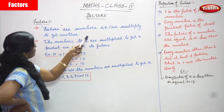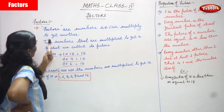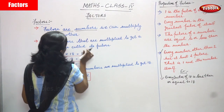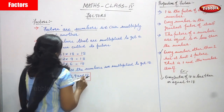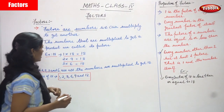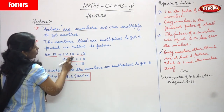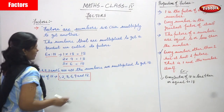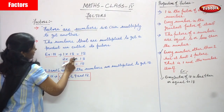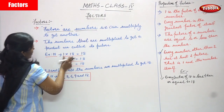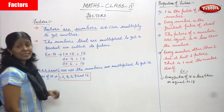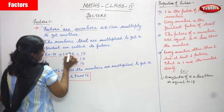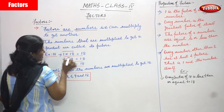Factors are numbers we can multiply to get another. So these are numbers — factors are numbers we can multiply to get another. For example, 1 into 18: you can get 18. These two numbers are multiplied together, and the result you get is called the product. So 1 and 18 are called factors.